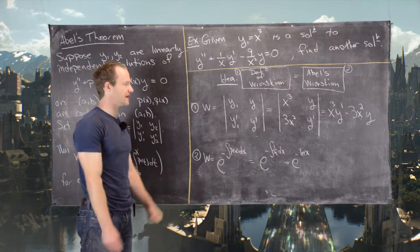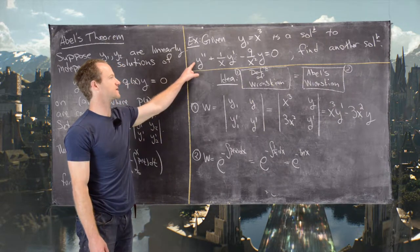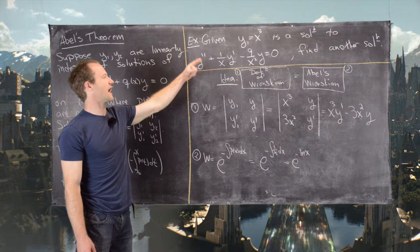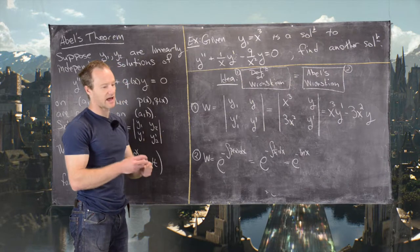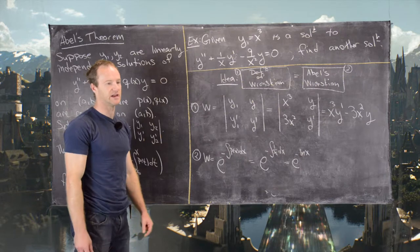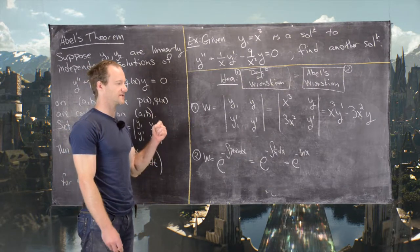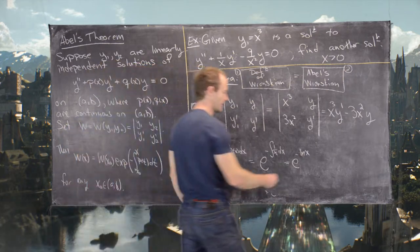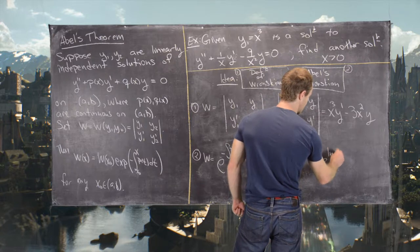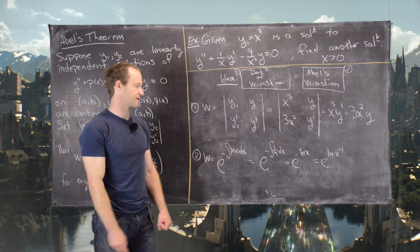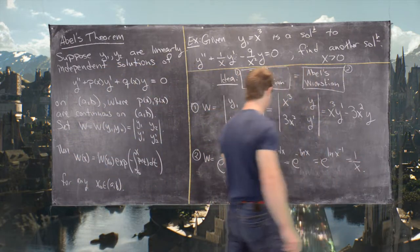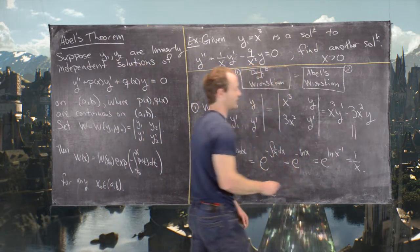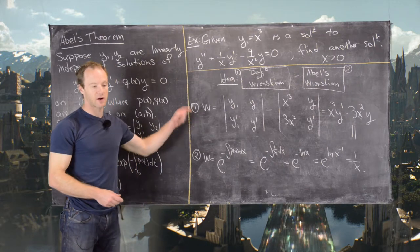We might note we need absolute values on x, but we're finding solutions for the interval where x is greater than 0. Notice that x equals 0 gives a discontinuity in p and q, which means solutions can't hop over that discontinuity, so we focus on x greater than 0. This gives us e to the natural log of x to the minus 1, which by log power rules equals 1/x. Setting the definitional Wronskian equal to Abel's Wronskian gives us a first-order linear differential equation for y.